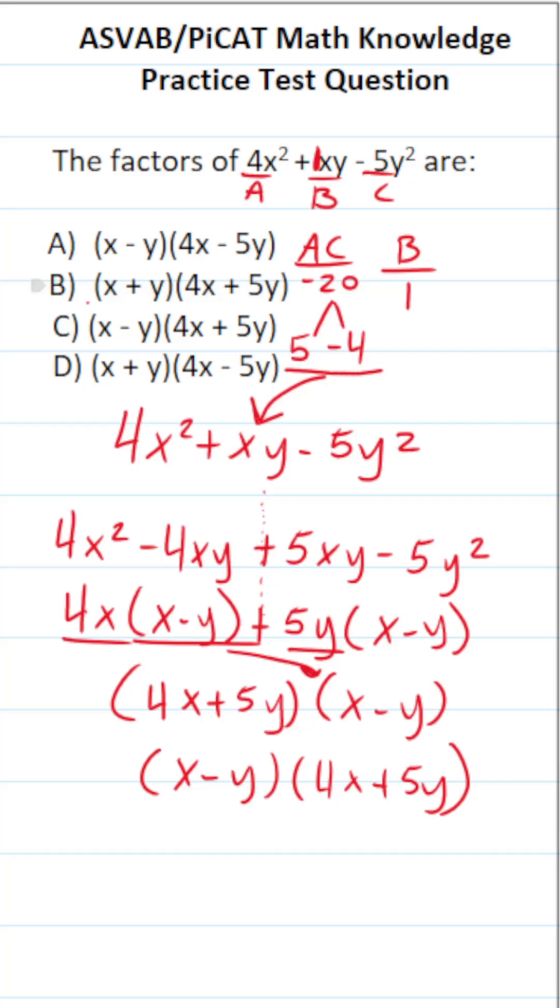This is x minus y. These are x plus y. And then we have 4x plus 5y. So clearly, this matches answer choice C.